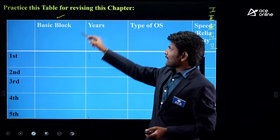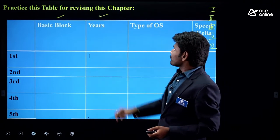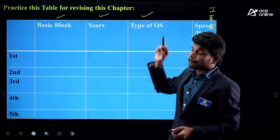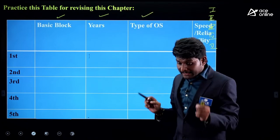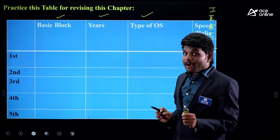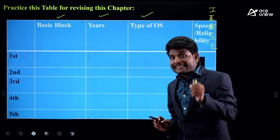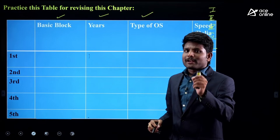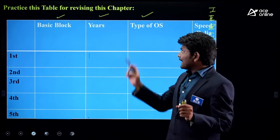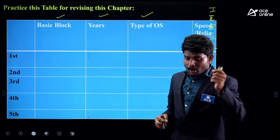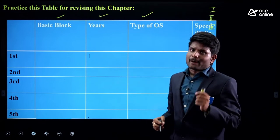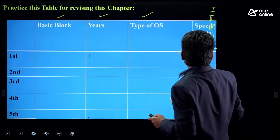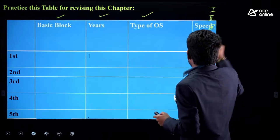What are the years the computer was active? What type of operating system? Till now they haven't asked questions on this specific point, but I've listed it here. Why? Because they are interested in generations of computers, so you need to learn all related knowledge about each generation. That's why I added this column.